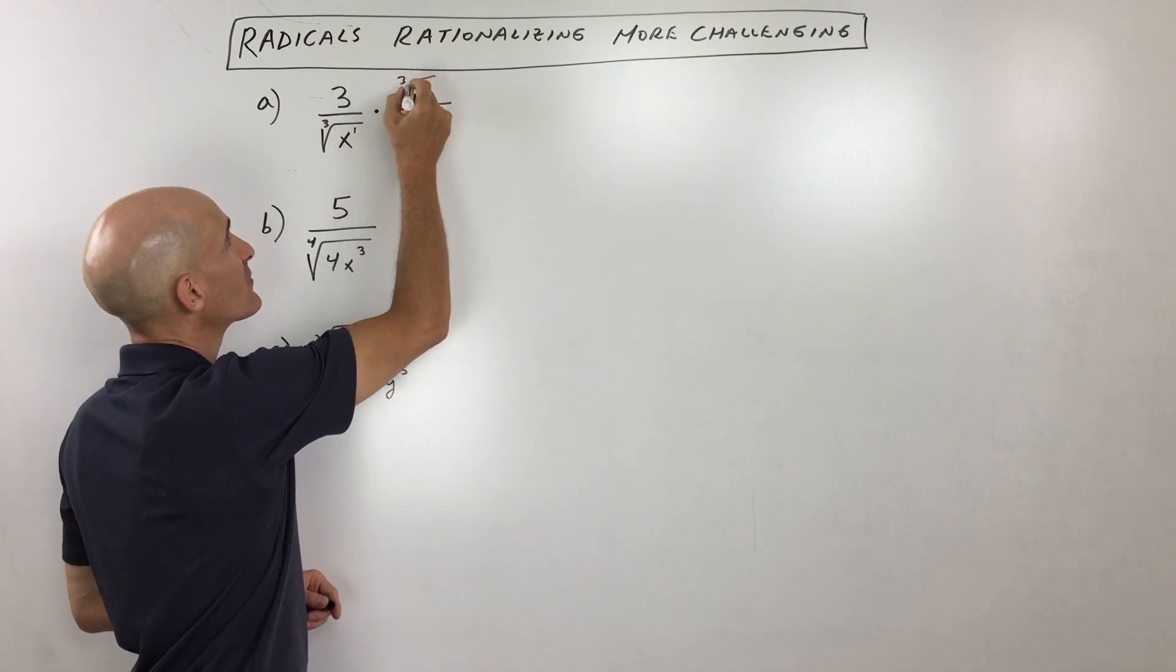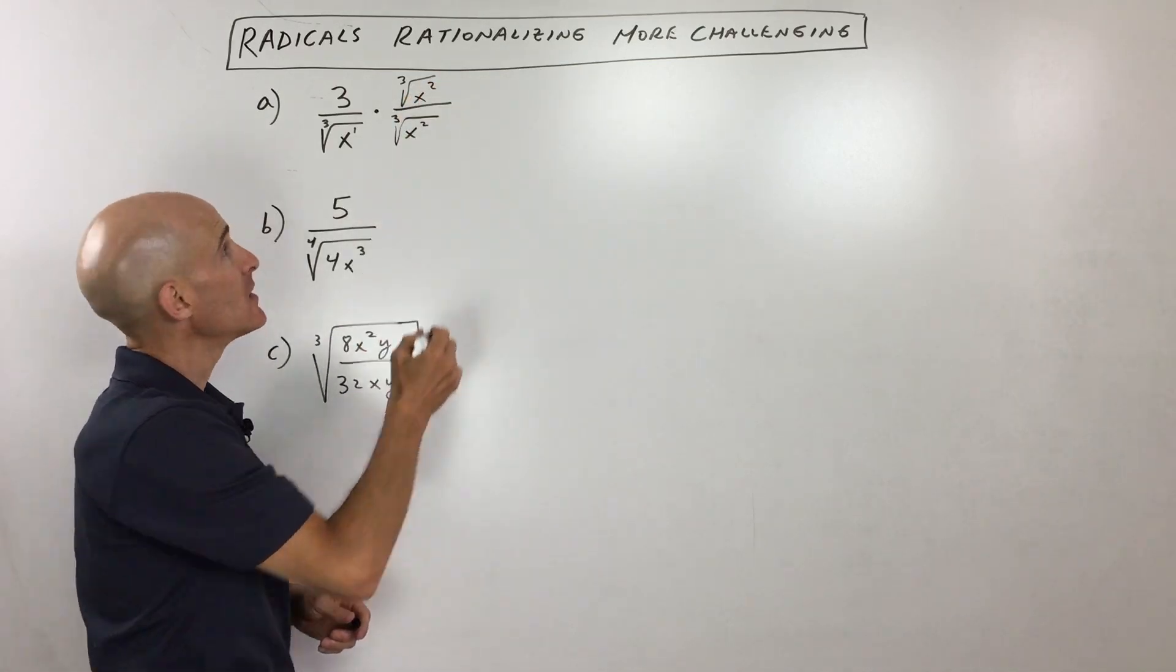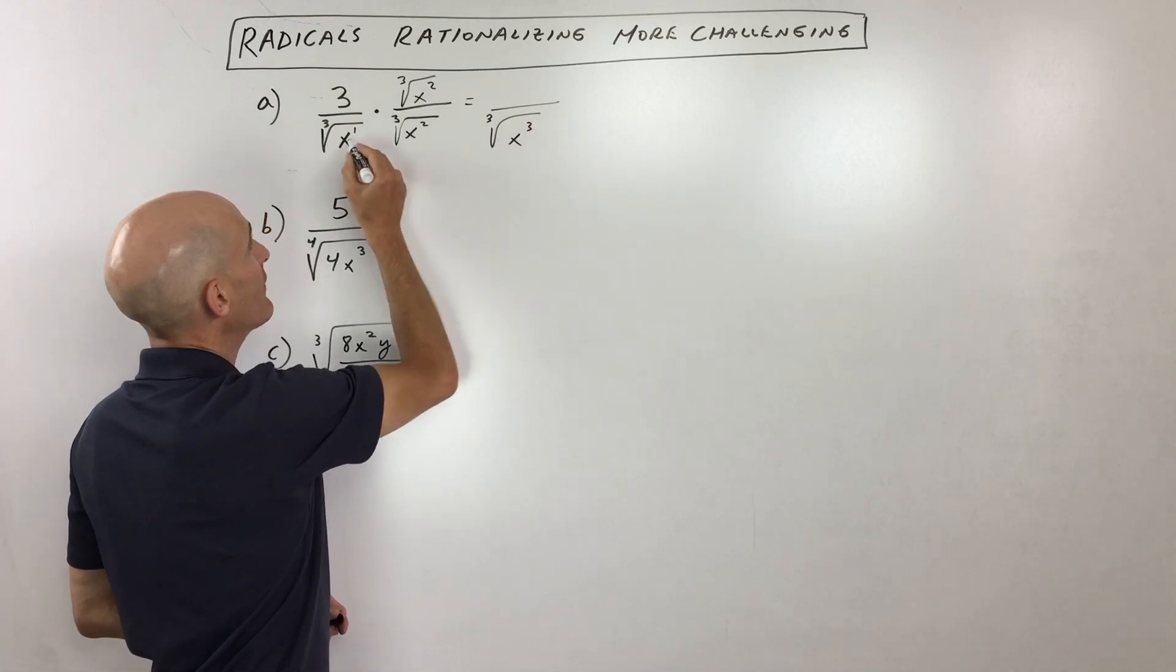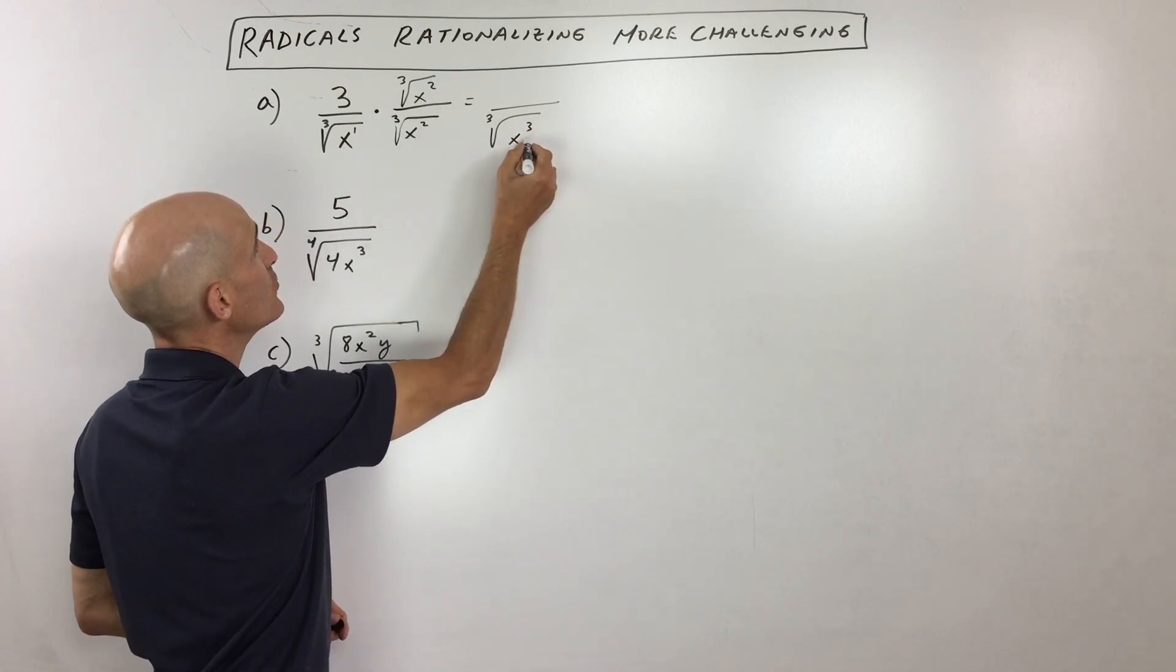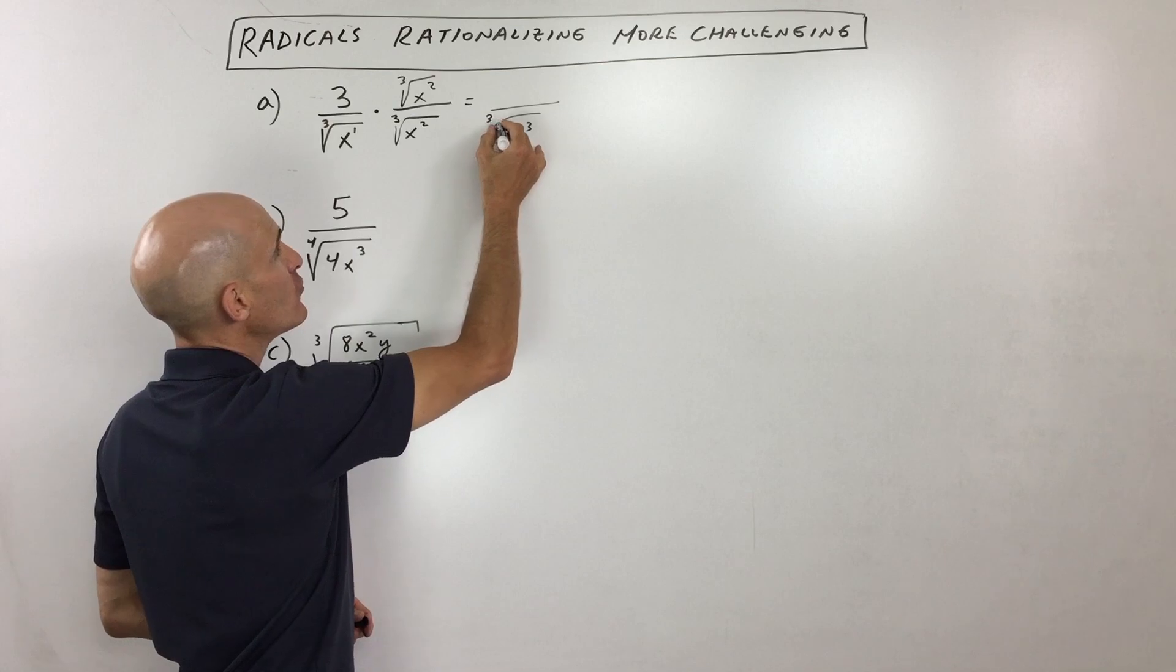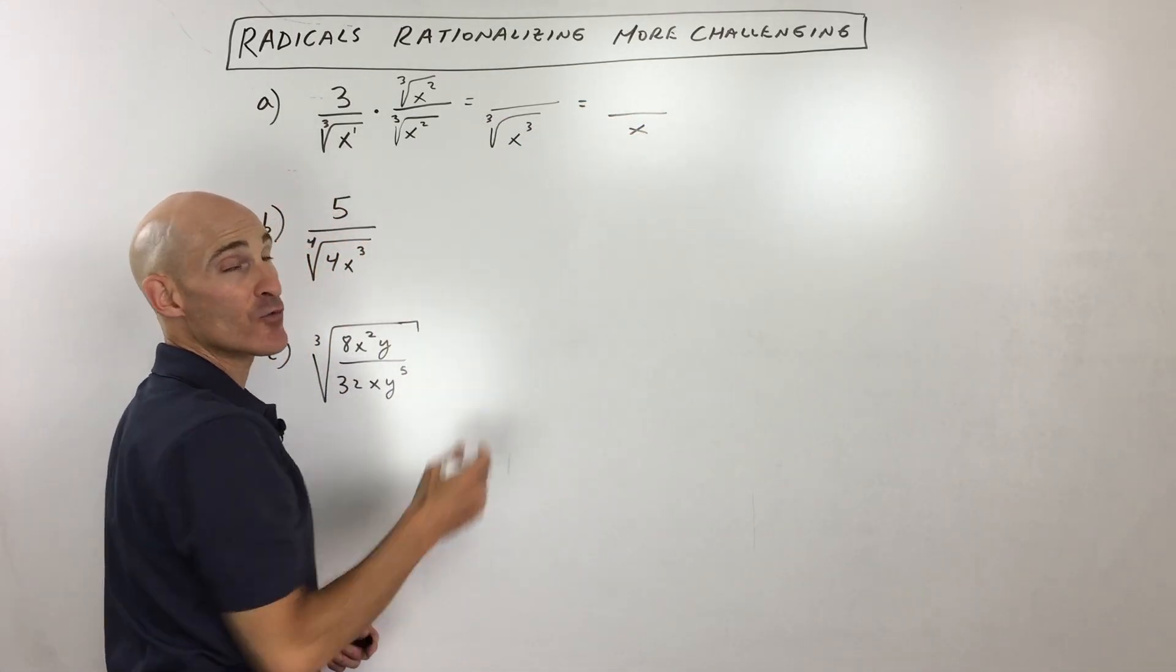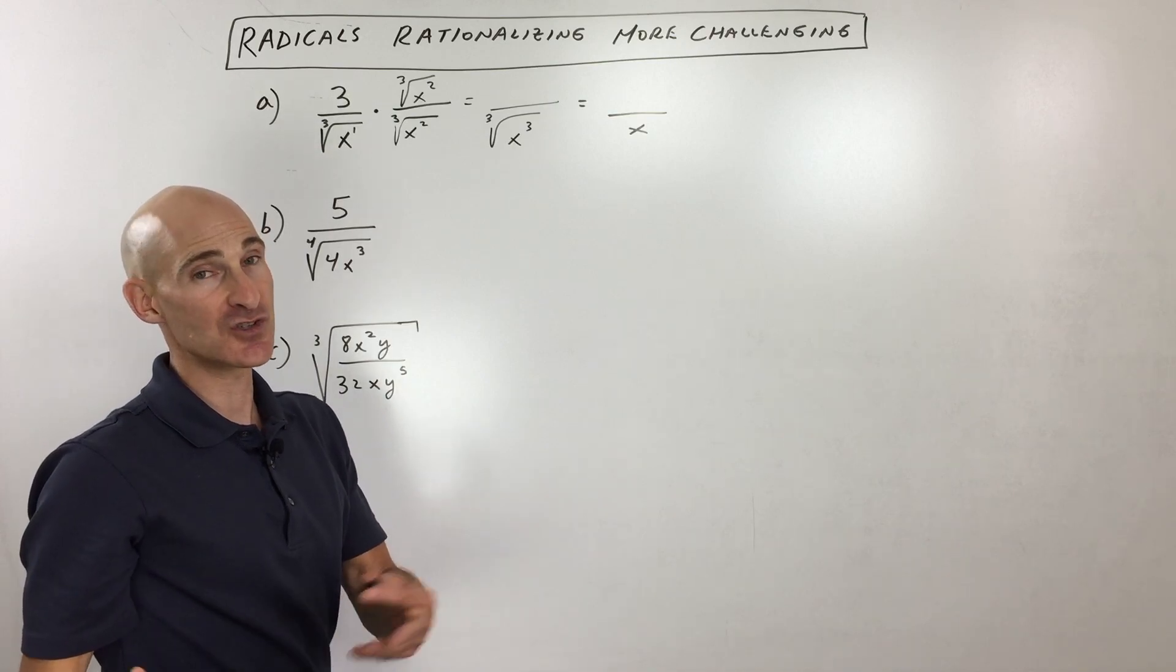So I'm going to multiply the numerator and the denominator by the cube root of x squared. So if I do that, what I can see now in the denominator is I have the cube root of x times x squared, which is x cubed. And the cube and the cube root cancel one another out, so that just gives us x in the denominator. So now we've gotten rid of that radical in the denominator.